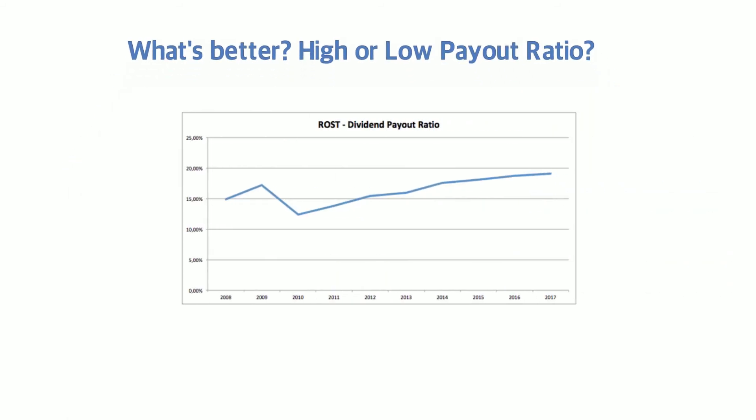For example, Ross Stores. This company has been able to keep its dividend payout ratio low, which gives it the flexibility to increase its dividends even if they don't increase their earnings.